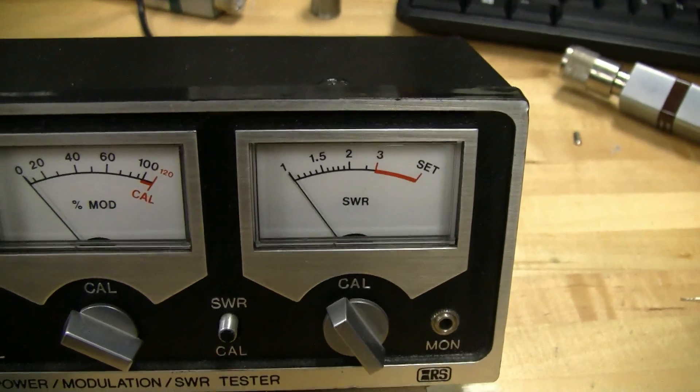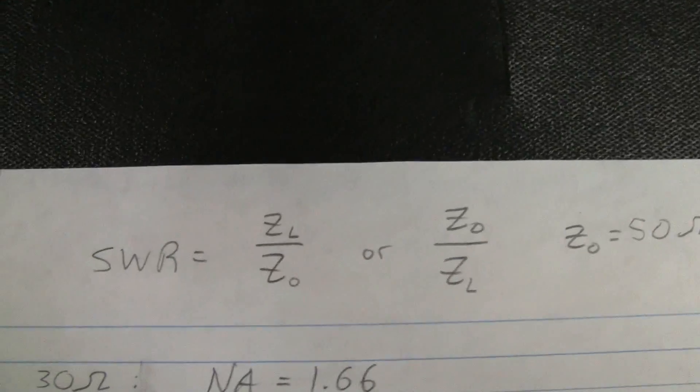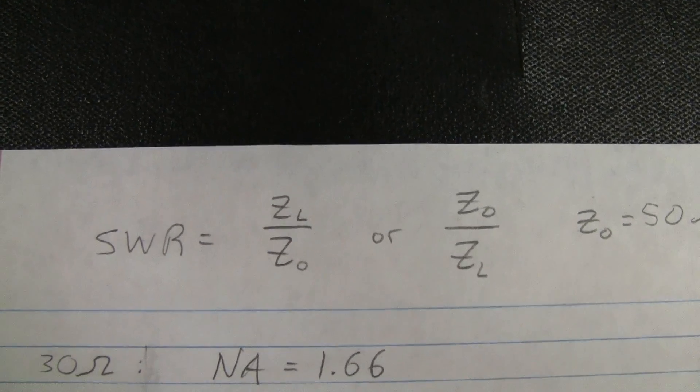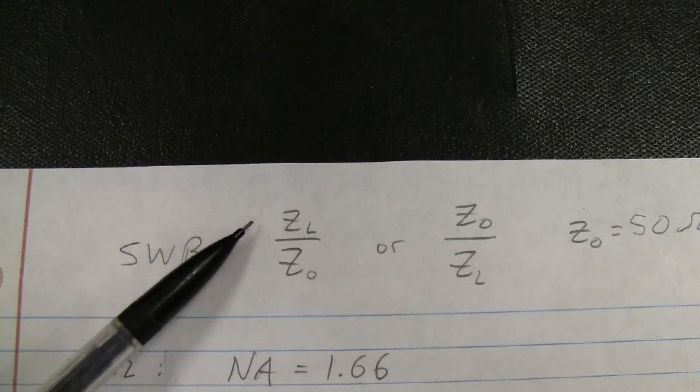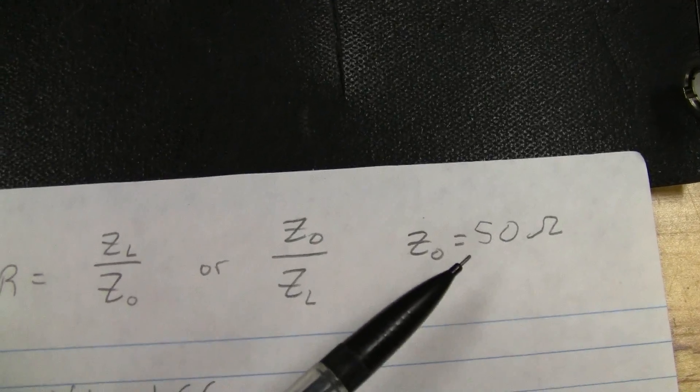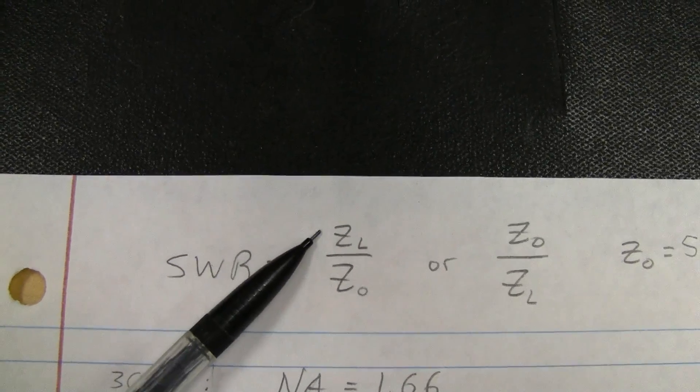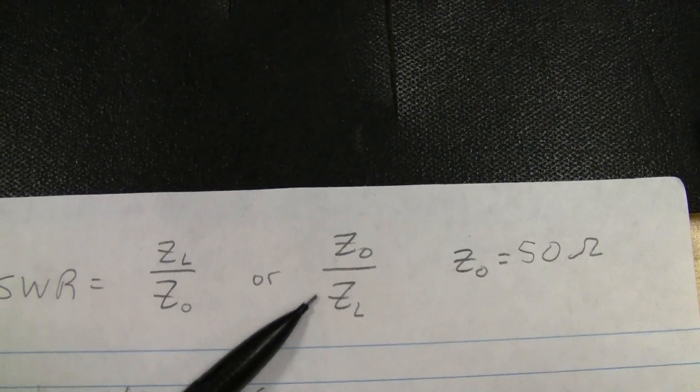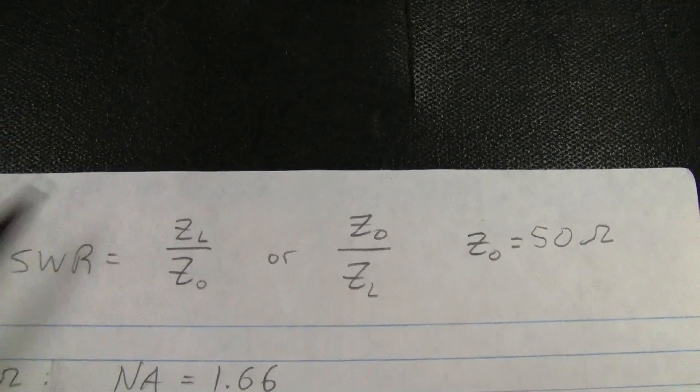If you're into radio, you're probably familiar with SWR. SWR is a measure of the ratio of the load impedance to the characteristic impedance. For radio, it's 50 ohms characteristic impedance. If your load is greater, it's load impedance over characteristic impedance. Or if your load is smaller, then it's characteristic impedance over load impedance.